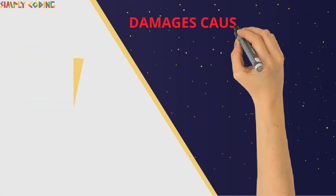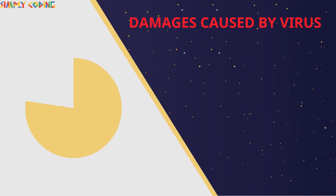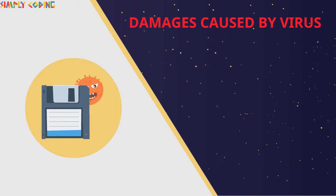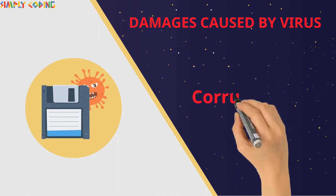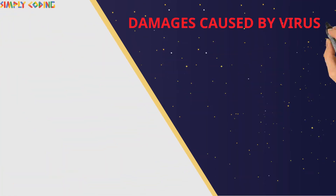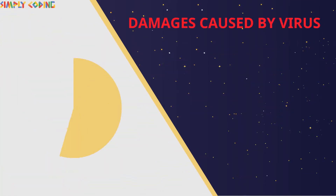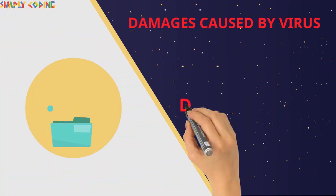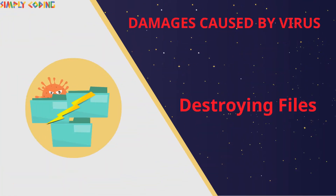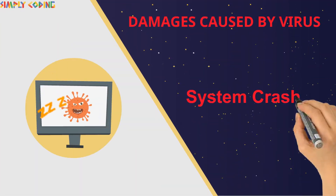The damages they cause include: they destroy the file allocation table leading to the corruption of an entire file system. They can create bad sectors on the disk destroying parts of programs and files, and they can cause the system to hang.